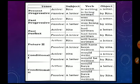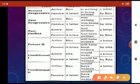For present progressive, the active sentence 'Rita is writing a letter' becomes 'A letter is being written by Rita' in passive. For past progressive, 'Rita was writing a letter' becomes 'A letter was being written by Rita.'